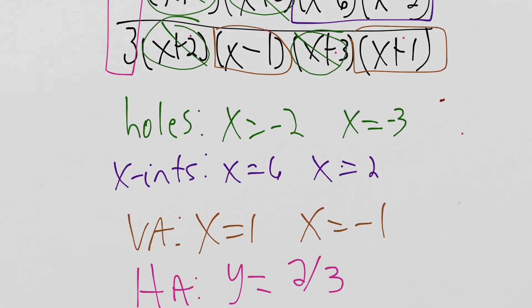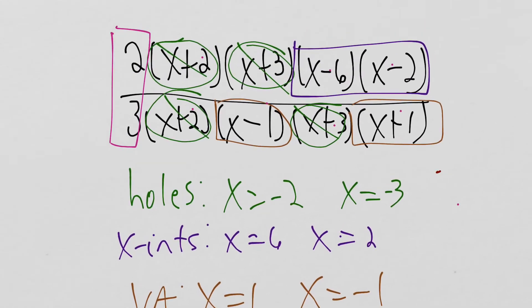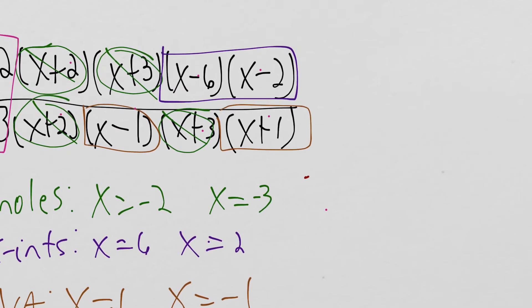And then the last thing that we can do is we can find the y intercept. The y intercept has an x value of 0, and we don't need to plug into the canceled factors, but we can plug 0 into the remaining parts of this function and just see what the y intercept should be. So y intercept calculations right here. So it's going to be 2 times 0 minus 6, which is negative 6. 0 minus 2 is negative 2.